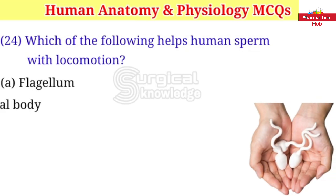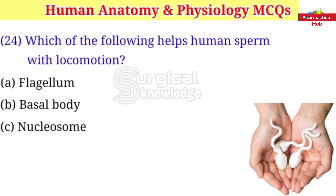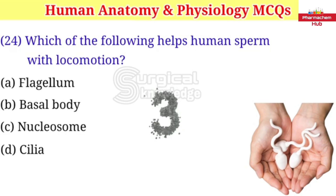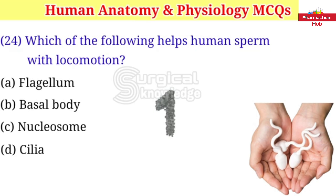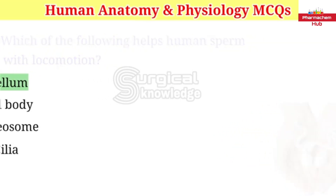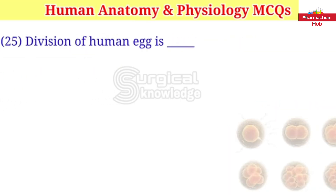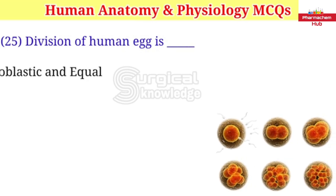Which of the following helps human sperm with locomotion? A. Flagellum B. Basal body C. Nucleosome D. Cilia. Right answer is flagellum.